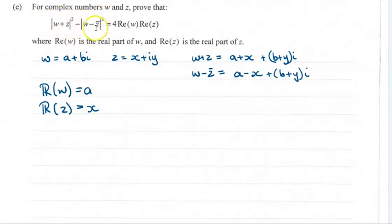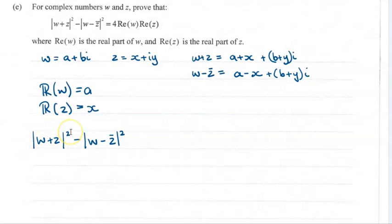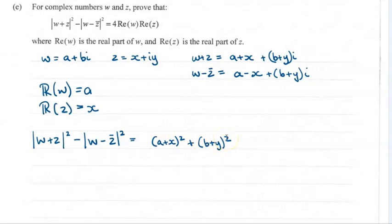Back to the left-hand side. Modulus means we take the real parts, add them together and square it, then add on the complex parts added together and squared, and take the square root. Since we square root and then square, those cancel each other out. So the first part is the real parts added together and squared, then add on the imaginary parts added together and squared.